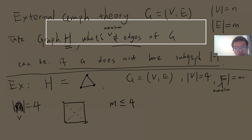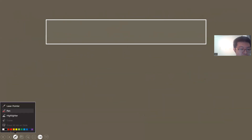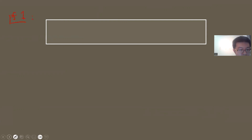In general, we try to solve this for an arbitrary graph H, but for the triangle-free case this problem is simple. There are two proofs, and both are very simple. Let me just present the two proofs.